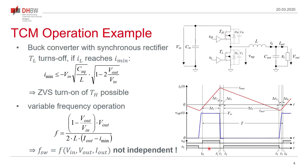Looking at the waveforms: the lower traces are the control waveforms, the blue trace is the midpoint voltage, and the red trace is the inductor current in triangular current mode. The inductor current has this triangular shape as the name implies, with a varying switching frequency. The switch turns off when we reach Imin, which discharges the capacitors so that the inverse diode of the high-side transistor conducts at time T5, and then at T6 the transistor can be turned on with zero voltage switching.